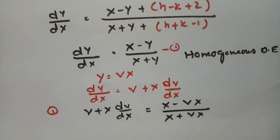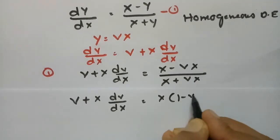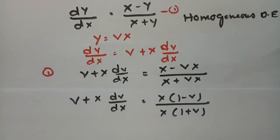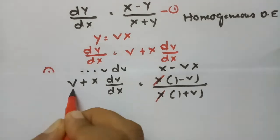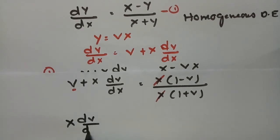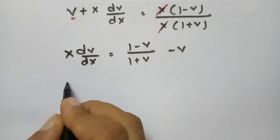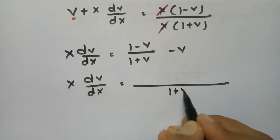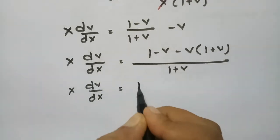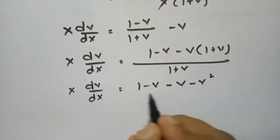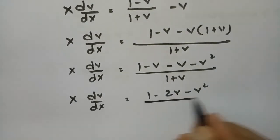Taking X as common and cancelling: v + X·(dv/dX) = (1 - v)/(1 + v). Sending v to the other side: X·(dv/dX) = (1 - v)/(1 + v) - v. Taking LCM (1 + v): X·(dv/dX) = (1 - v - v(1 + v))/(1 + v) = (1 - v - v - v²)/(1 + v) = (1 - 2v - v²)/(1 + v).